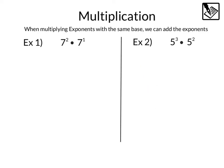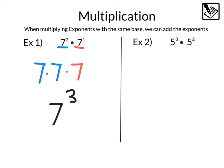Let's multiply our knowledge of exponents by covering multiplication. When multiplying exponents with the same base, we can add the exponents. Let's take a look at this one. We've got seven squared times seven to the first power. Seven squared is seven times seven, and seven to the first is times another seven, giving us a total of two plus one, or three, as our exponent. So this would evaluate to seven to the third power.